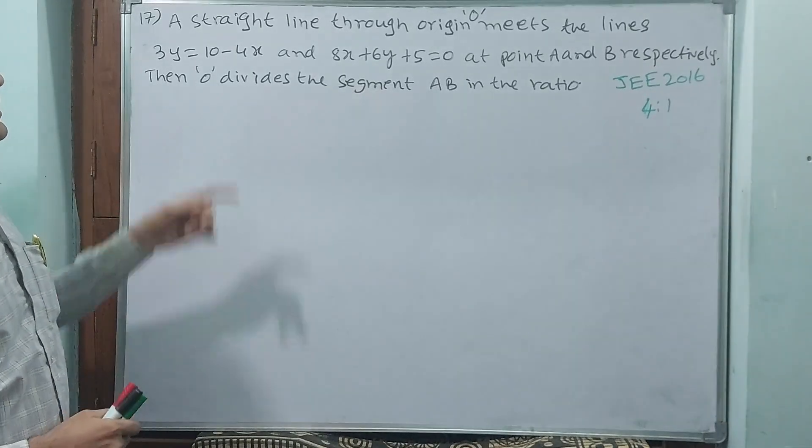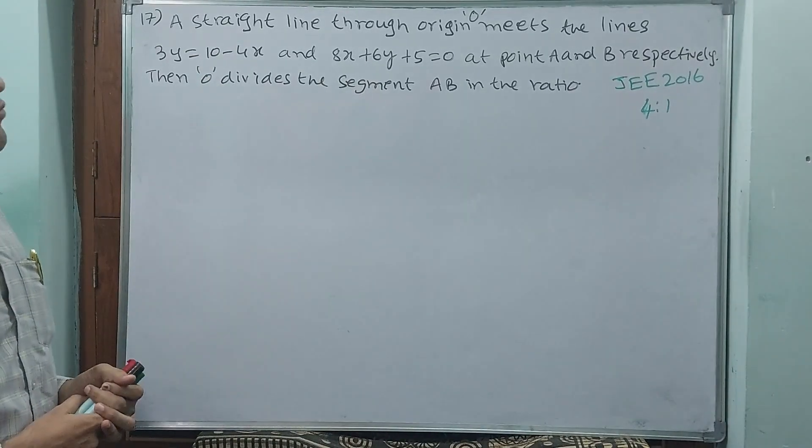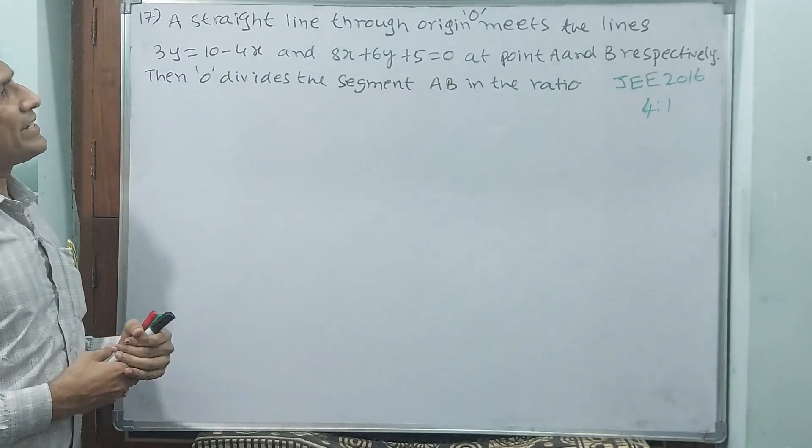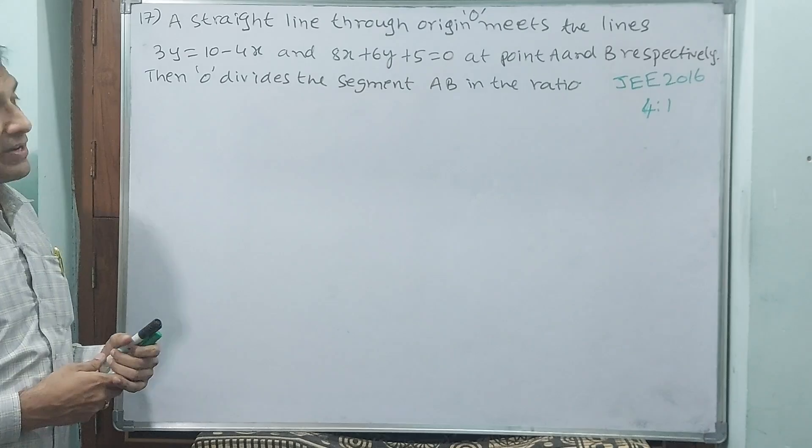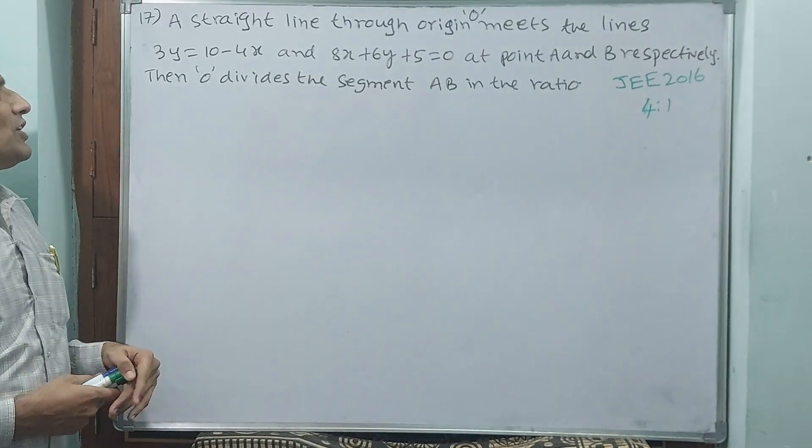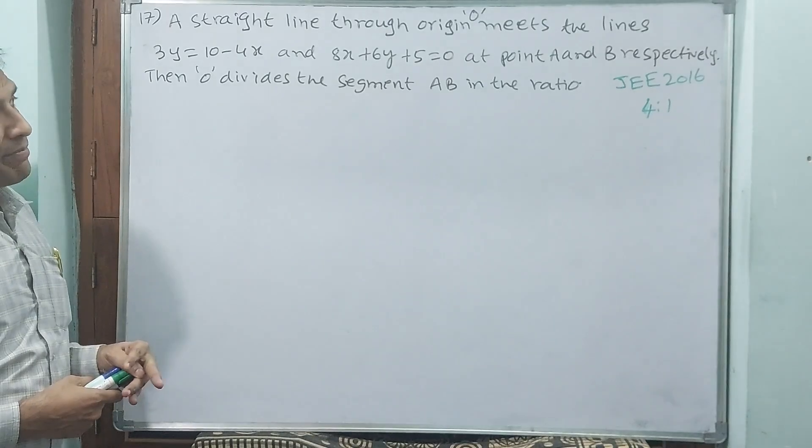See question number 17. A straight line through origin O meets the lines 3y = 10 - 4x and 8x + 6y + 5 = 0 at points A and B respectively. Then O divides the segment AB in the ratio.